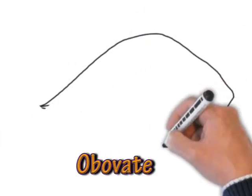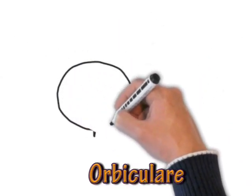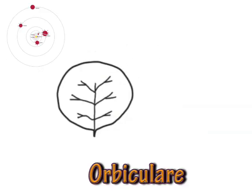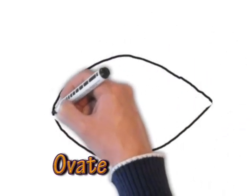Then we have obovate — this is like an oval with a slightly lumpy obtuse bit in the middle, going into an ovate part, so it has a slight bulge on it. Then we go for orbicular — think of orbit when trying to remember orbicular, as it goes round; quite a big leaf. And then we have ovate, just like an oval.